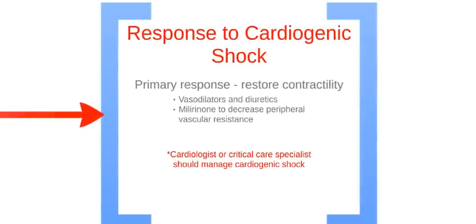The victim will have a possible decrease in level of consciousness. The primary response is to restore contractility. Administer vasodilators and diuretics. Utilize Milrinone to decrease peripheral vascular resistance. If additional volume is needed, cautiously administer 5 to 10 milliliters per kilogram over 10 to 20 minutes. Note that a cardiologist or critical care specialist should manage cardiogenic shock.